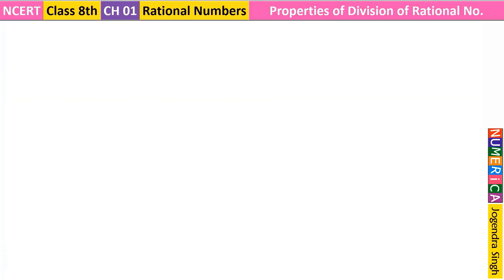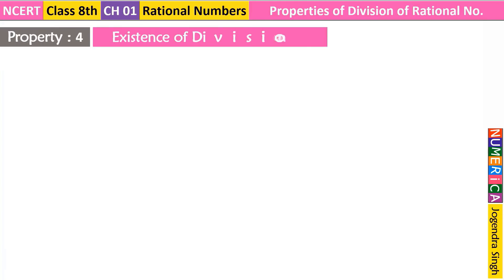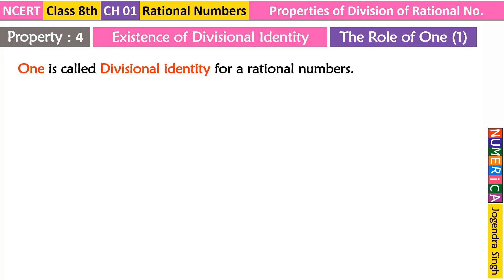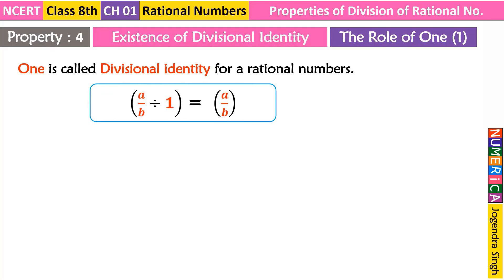Now property number 4 — existence of divisional identity. This is also called the role of 1. In multiplication we already studied this — exactly the same concept applies here. 1 is called the divisional identity for a rational number. In formulation: a upon b divided by 1 always gives a upon b. For example: 5 upon 7 divided by 1 equals 5 upon 7. Any number divided by 1 always gives the same number.